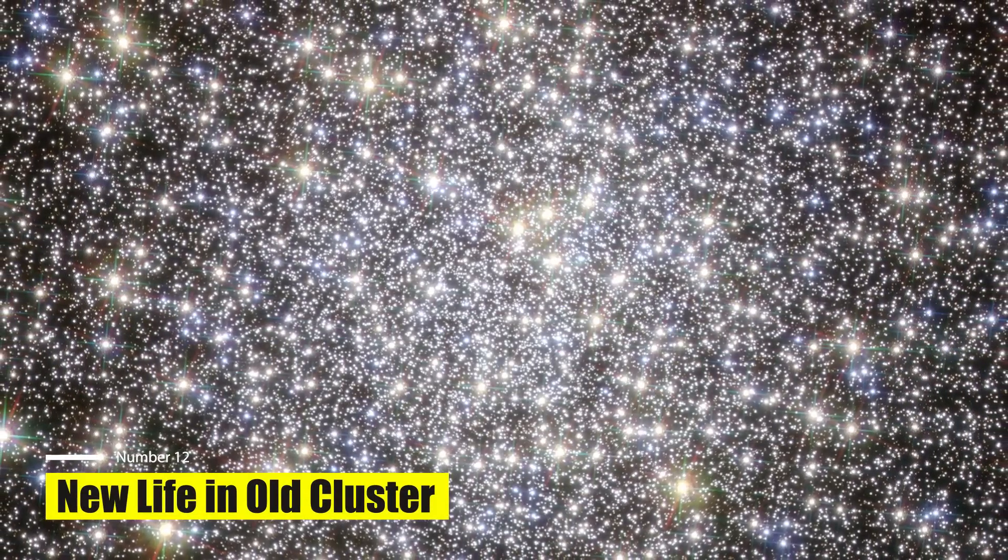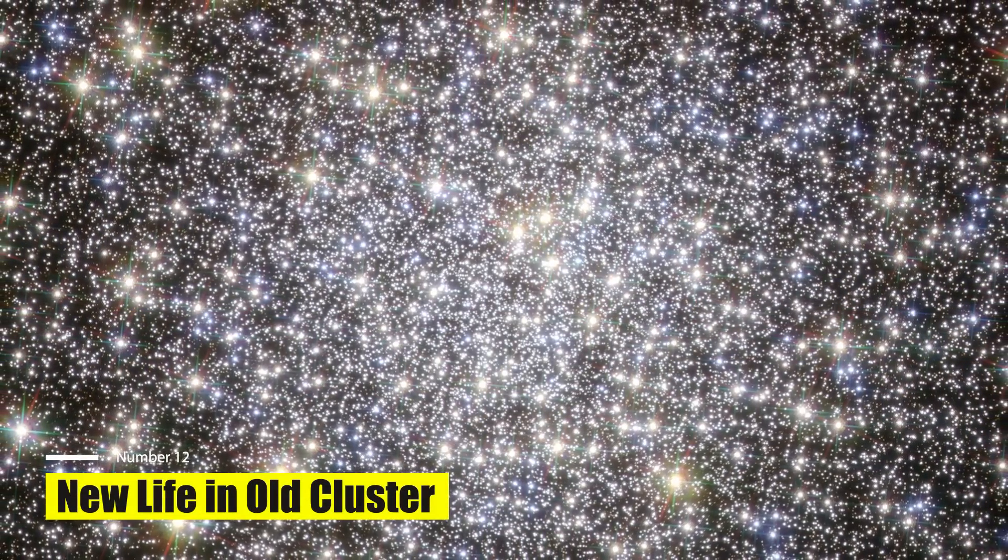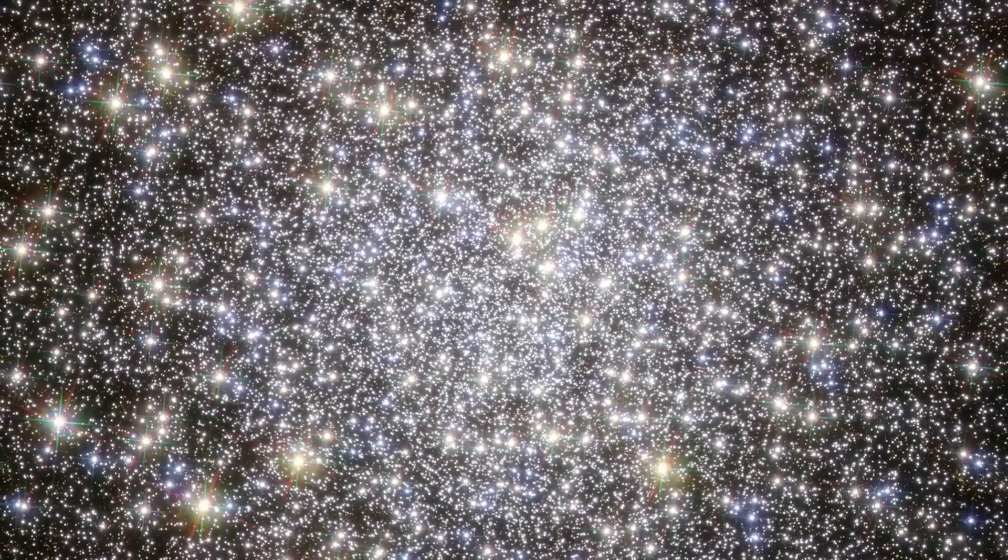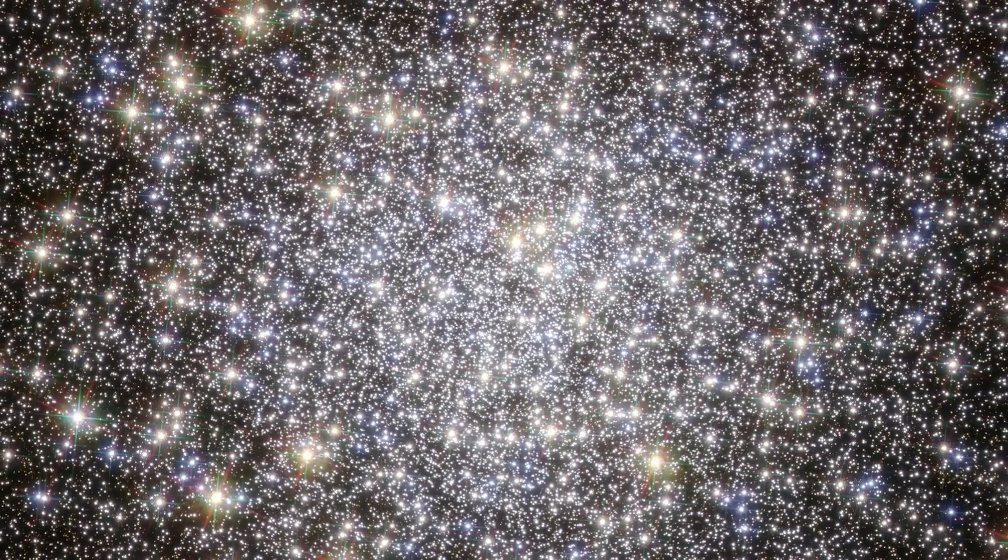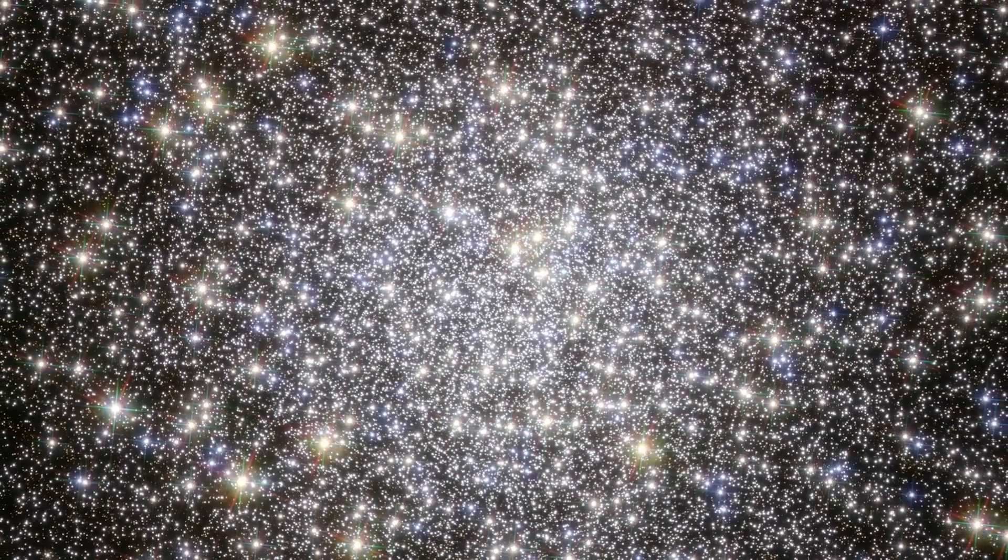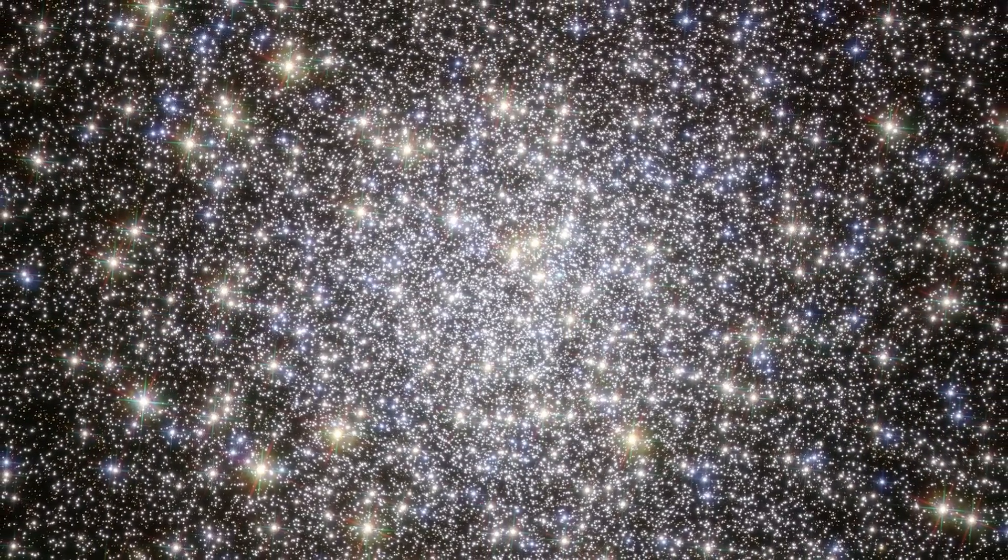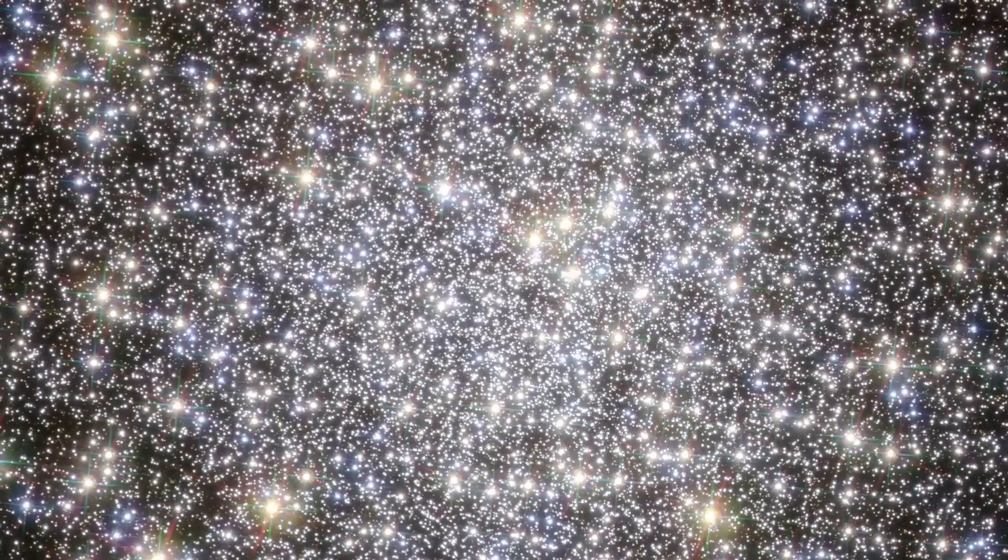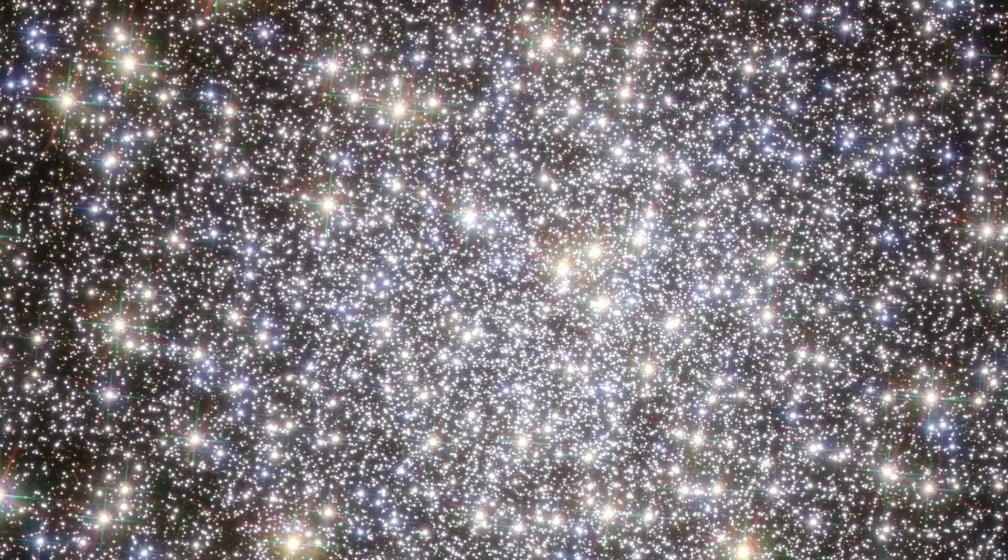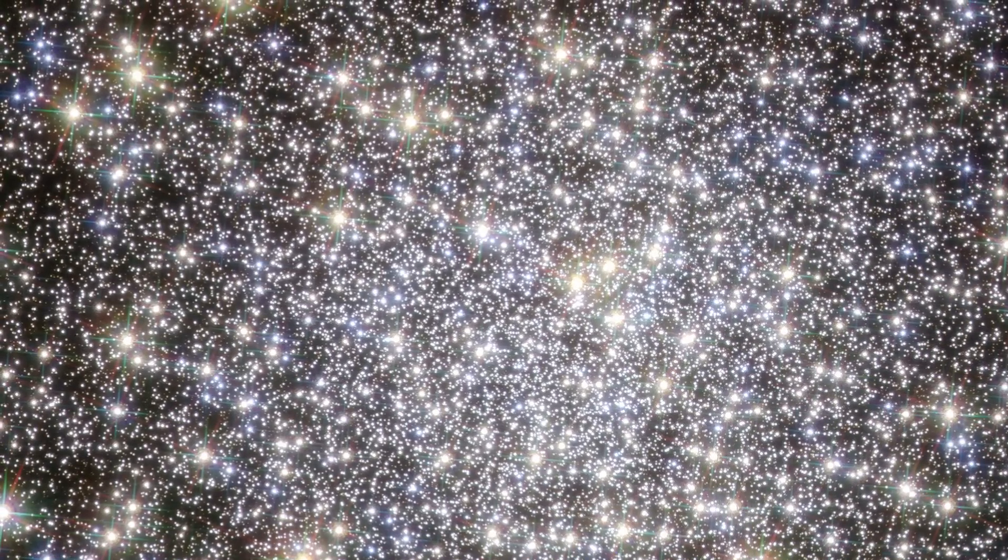New Life in Old Cluster. This image from the James Webb Space Telescope displays the Milky Way's oldest globular cluster, Messier 5. Although the majority of its stars were formed over 12 billion years ago, some unexpected newcomers breathed new life into this ancient population. Stars within globular clusters evolved together. The most massive stars exhaust their fuel in less than a million years and end in supernova explosions.